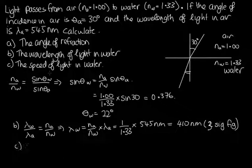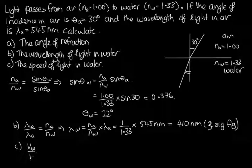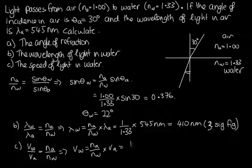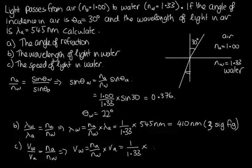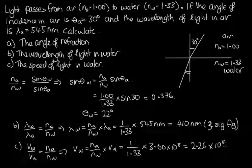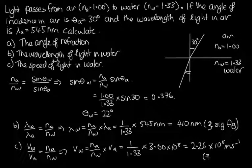For part C, we're asked to find the speed of light in water. Using Snell's law, the speed in water over the speed in air equals N_air over N_water. So the speed in water equals 1 over 1.33 times V_air. The speed of light in air is approximately equal to the speed of light in a vacuum, which is 3.00 × 10⁸ metres per second. So this gives us 2.26 × 10⁸ metres per second — still very fast, but not as fast as in air. This is to three significant figures.